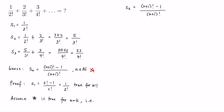We're going to show that it is also true for n equal to k plus 1. If this is true for n equals k, then the sum of the first k plus 1 terms is equal to S of k plus a sub k plus 1. In our formula, the kth term a sub k is equal to k over (k+1) factorial.